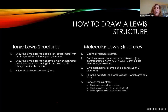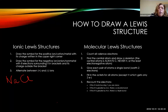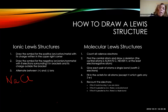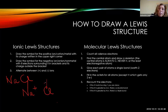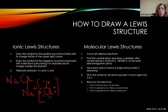Chlorine starts out with seven electrons but gains sodium's electron and therefore gains a negative charge. To show that all electrons in this molecule belong to the chlorine, I put brackets around it and put the negative charge outside the brackets. That is an appropriate Lewis structure for sodium chloride.